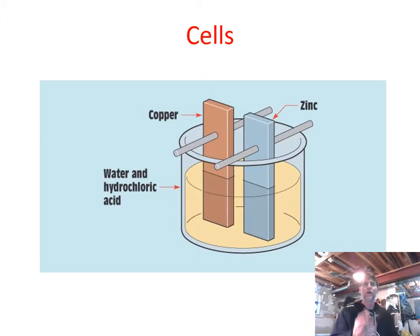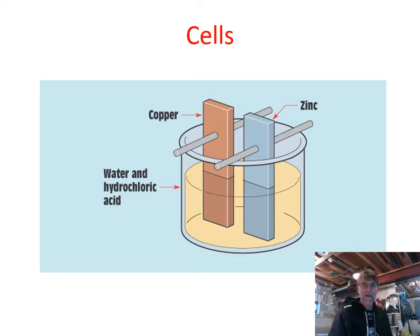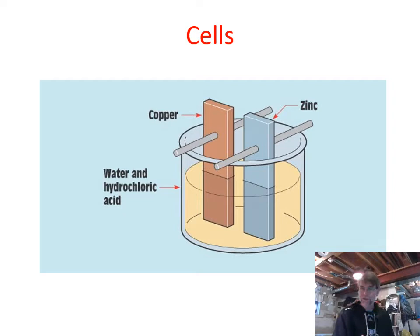Here's a cell: we have a jar with an electrolyte — in this case water and hydrochloric acid — and two electrodes made of copper and zinc placed in it. As a result, there's a movement of electrons and a measurable potential from the copper plate to the zinc plate. This is a battery in its simplest form, called a cell rather than a battery because it's just a single pair of plates in the electrolyte.